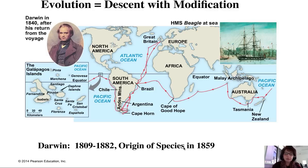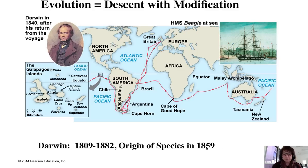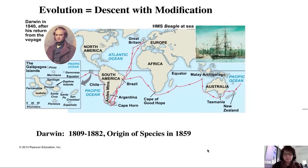Darwin came back, raised his family, and spent a lot of time at Down House — a beautiful estate — really ruminating on the things he'd brought back. He took lots of notes in notebooks, and finally published On the Origin of Species in 1859.